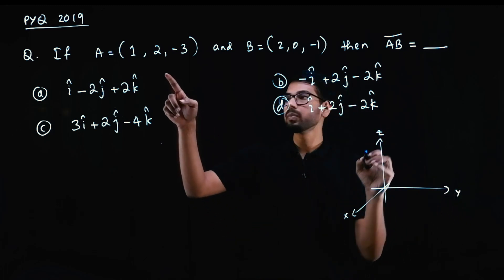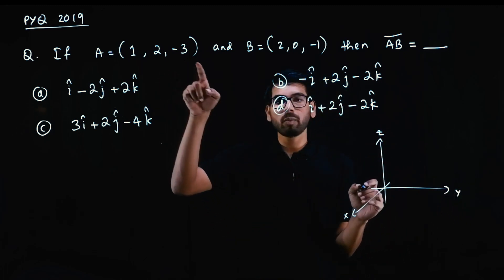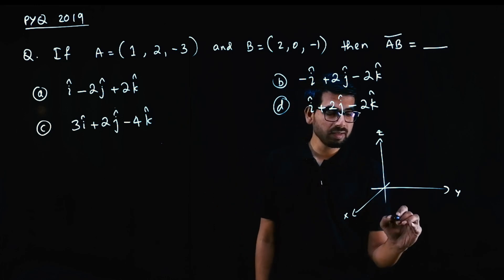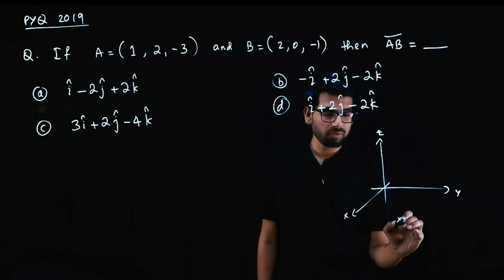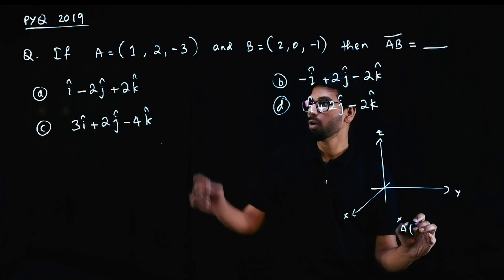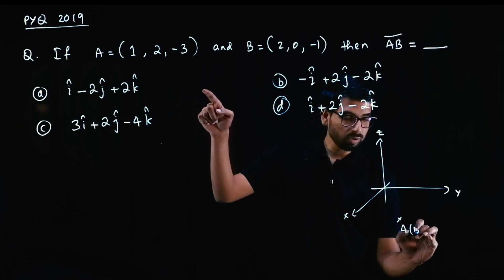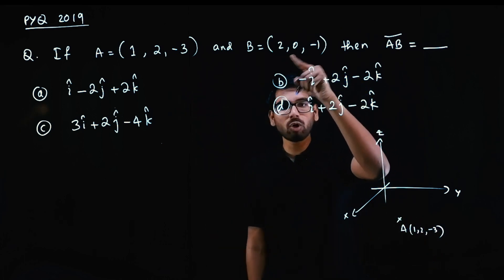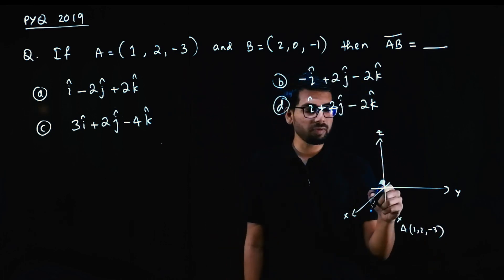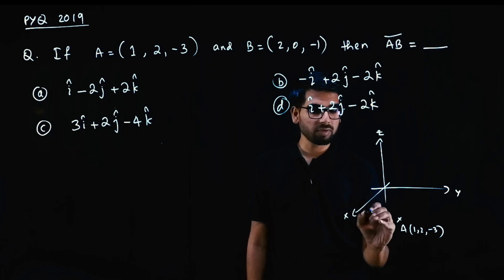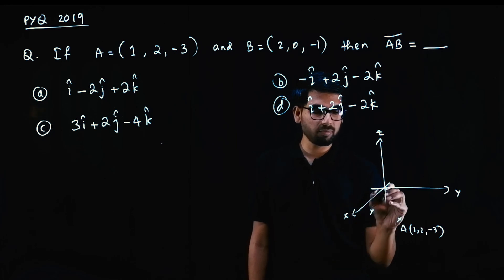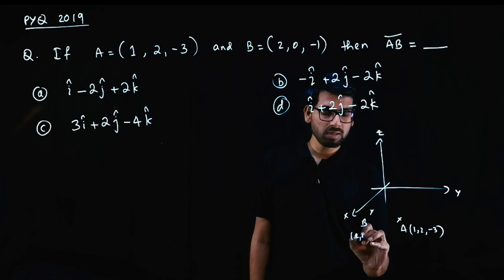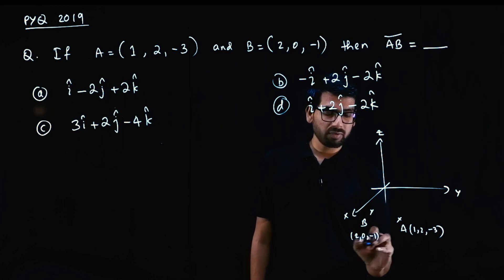Point A here is (1, 2, -3), so A = (1, 2, -3). And B here is (2, 0, -1), that is B = (2, 0, -1), plotted somewhere here. So this is point B: (2, 0, -1).